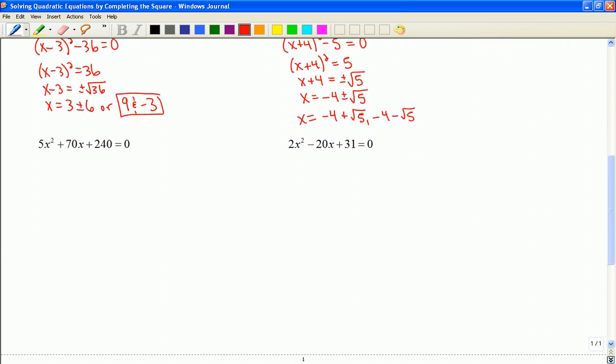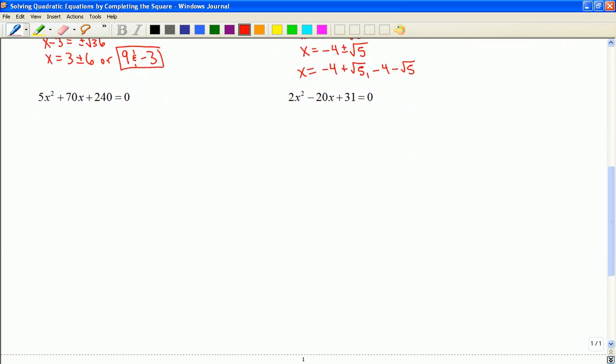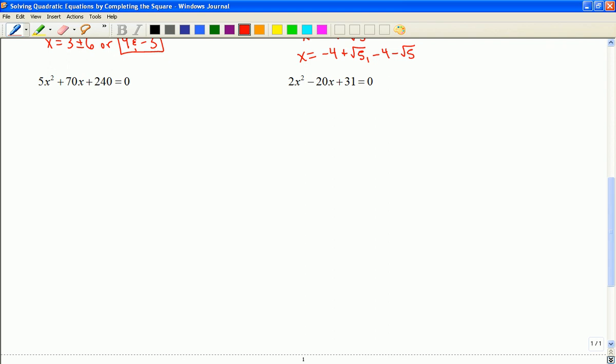So as we encounter more complicated quadratic equations, the only difference that we have is it's more complicated completing the square. So in this instance, the advice that I had given you previously was to factor out your common factor here. So 14 divided by 2 is 7. 7 squared is 49.